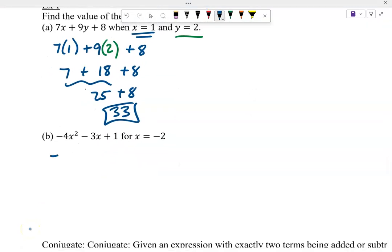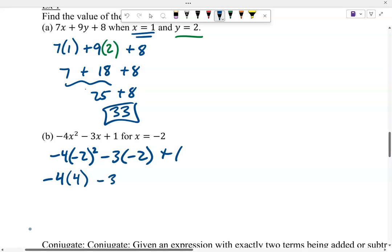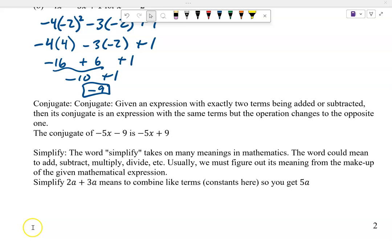Our x is negative 2. So we got negative 4 times negative 2 is being squared. We're going to do the order of operations. Negative 2 is squared, so that's negative 2 times negative 2. I get a positive 4. Now we do the multiplication division left to right. So I'm going to go negative 16. Negative 4 times 4. Negative 16. Negative 3 times negative 2 is a positive 6. And now we do the addition and subtraction left to right. Negative 16 plus 6. Negative 10. Negative 10 plus 1. Negative 9.